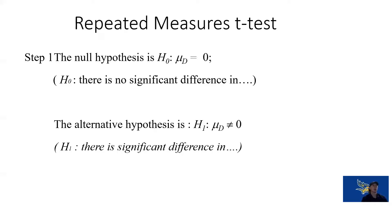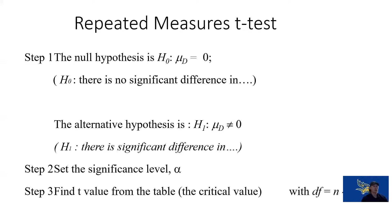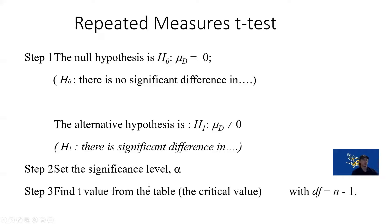For this repeated measures or dependent t-test, we follow the same format as an independent t-test: find degrees of freedom, set our alpha level, and find our critical t value. The key difference is the degrees of freedom. Because we're using the same population, degrees of freedom is the total population minus one — we don't lose a degree of freedom for having two separate groups. This is one advantage of the repeated measures design: we have a greater chance of finding a significant difference.